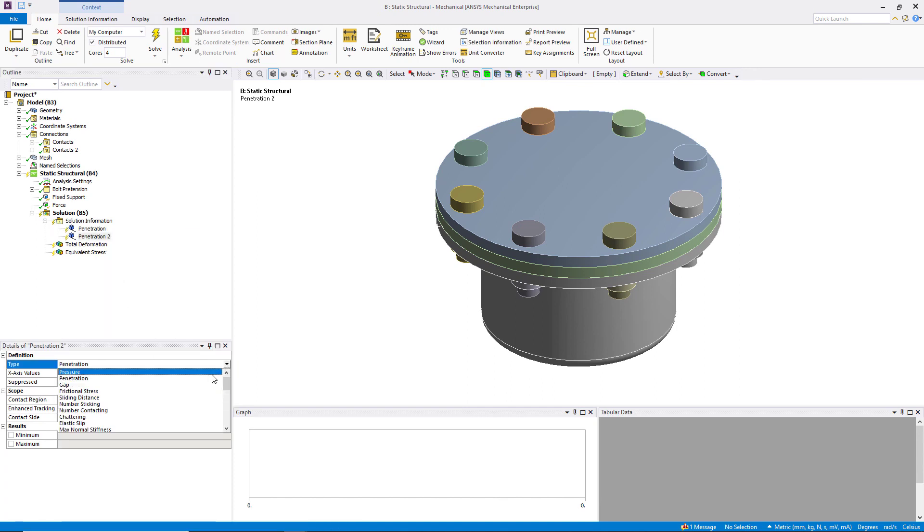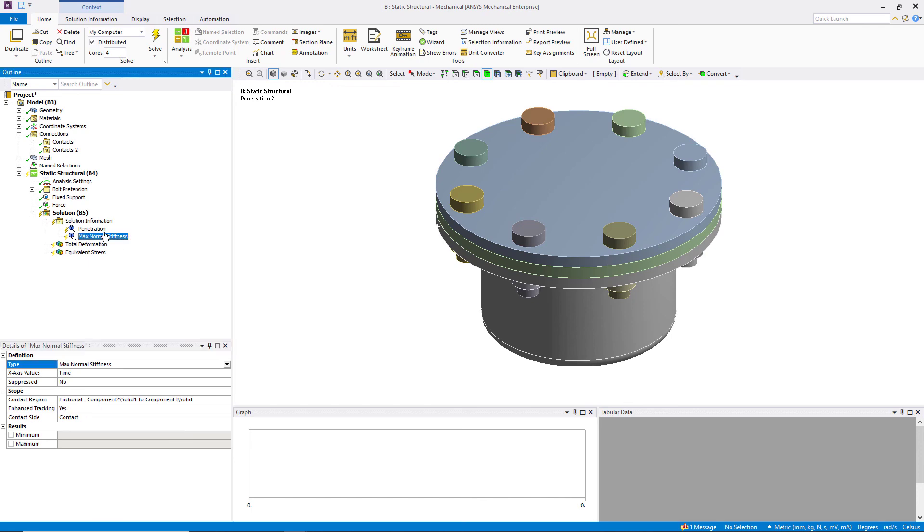In this example, we can see that the penetration increases when the contact stiffness reduces during the simulation. This tool can help us estimate the factor by which we may need to increase or decrease the contact stiffness to get an accurate and efficient simulation result.